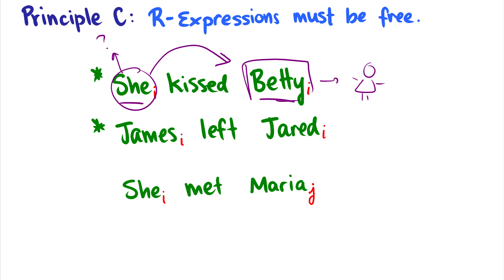We also can't say 'James loved Jared' if James and Jared are the same person. But we can say 'she met Maria,' where Maria does not refer to 'she' — Maria is some other person and 'she' is a different person. That is Principle C.